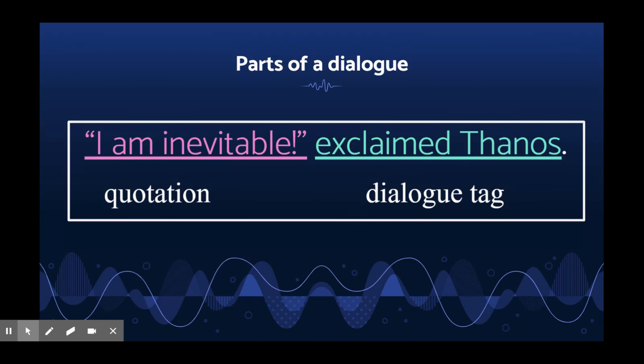These are the parts of a dialogue. The first part of this example is the quote. This part shows what the character says, and it's inside the quotation marks. The second part is called the dialogue tag. This shows who is talking and the tone in which they are speaking.